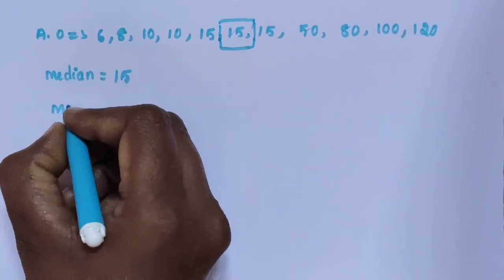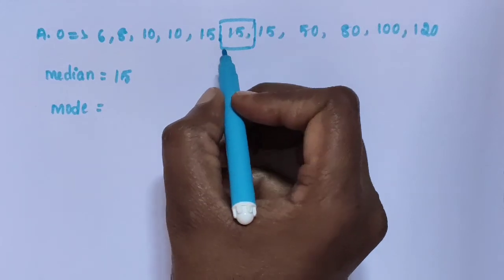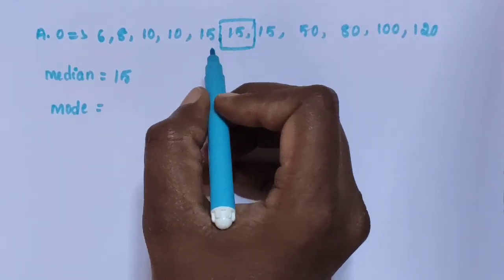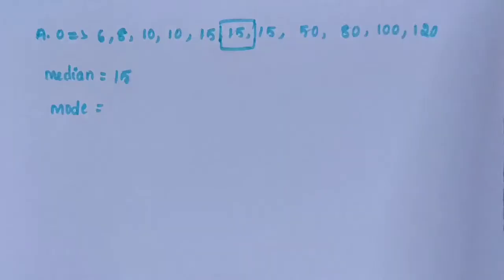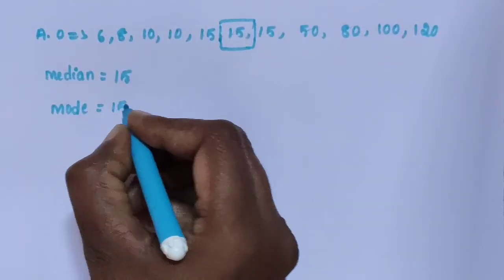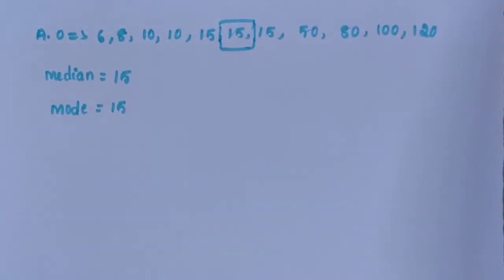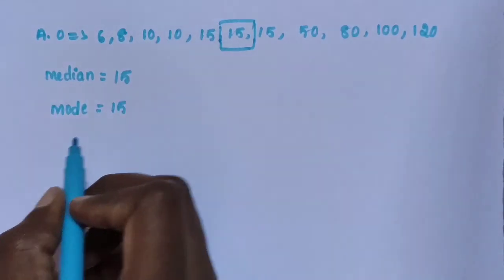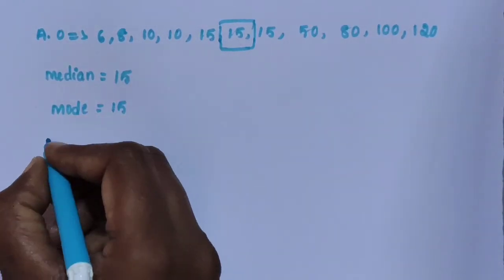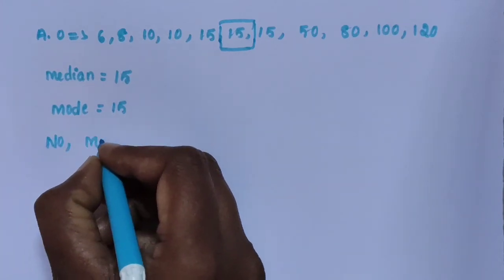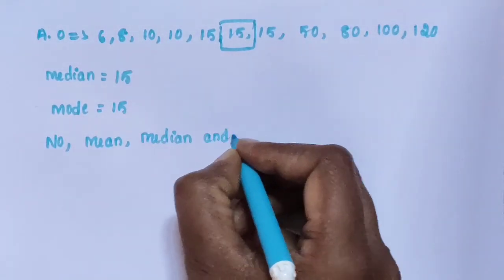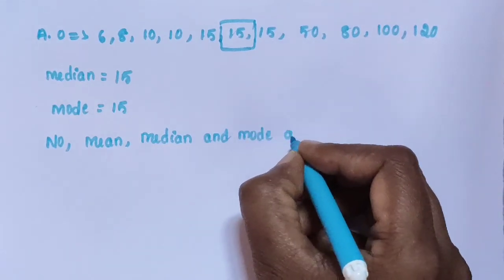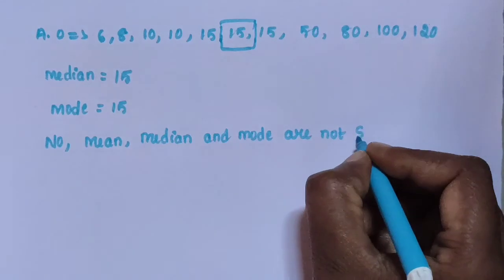And mode: the majority value of the given data is 15. It appears 3 times. 10 appears 2 times. Other numbers appear only 1 time. So mode is 15. Mean is equal to 39, median is equal to 15, and mode is equal to 15. No, mean, median and mode are not the same.